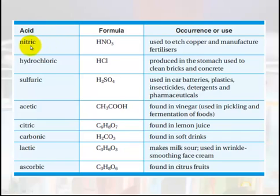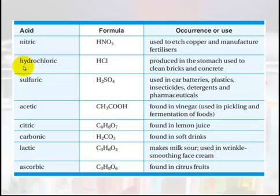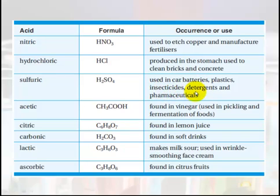Here are some common acids you need to know the formulas for. Nitric acid is HNO3, used in industry to manufacture fertilizers and for copper etching. Hydrochloric acid is HCl — you've used that in the lab; it's produced in your stomach and also used to clean bricks and concrete. Sulfuric acid is H2SO4, used in car batteries, plastics, insecticides, detergents, and pharmaceuticals.